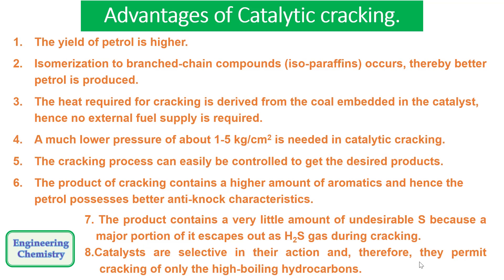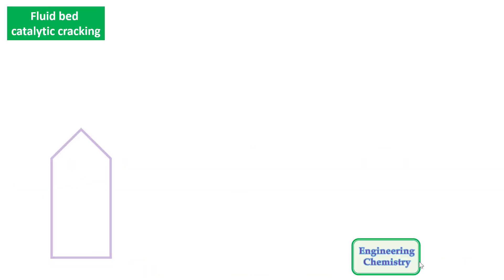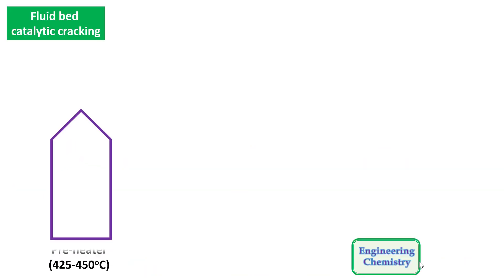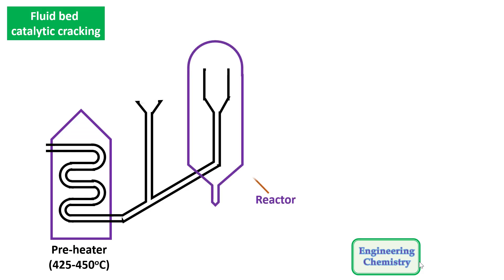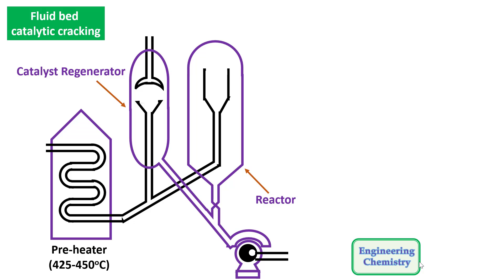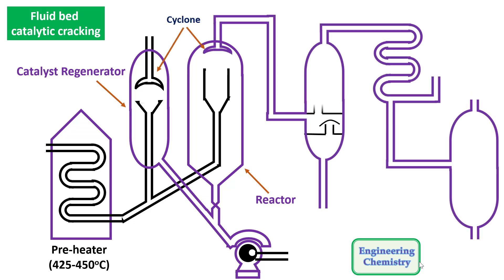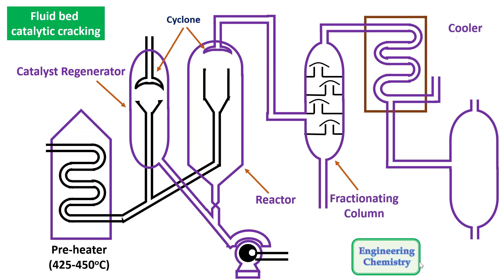In fluid bed catalytic cracking, there is a preheater, then a reactor, a catalyst regenerator, cyclones for the removal of gases, a fractionating column, a cooler, and a stabilizer.